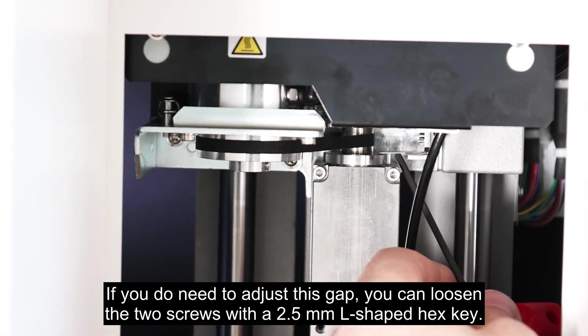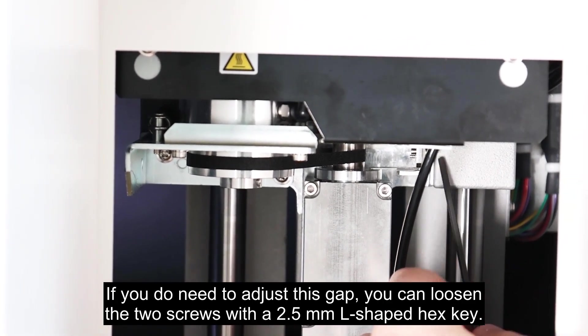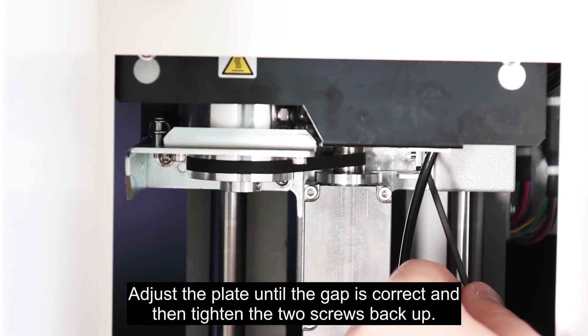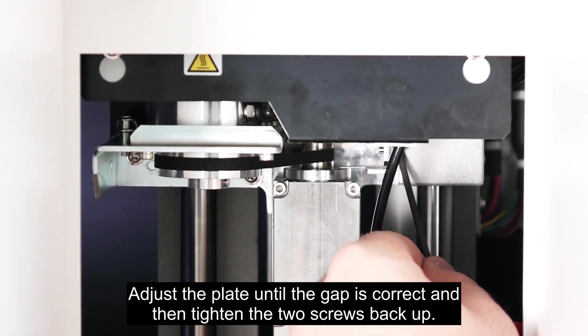If you do need to adjust this gap, you can loosen the two screws with a 2.5 millimeter L-shape hex key. Adjust the plate until the gap is correct and then tighten the two screws back up.